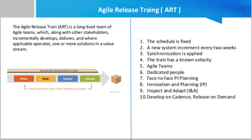The system demo provides a mechanism for evaluating the working system, which is an integrated increment from all the teams. Synchronization is applied — all teams on the train are synchronized into the same PI length, typically 8 to 12 weeks, and have common iteration start and end dates and duration. The train has a known velocity, meaning each ART can reliably estimate how much cargo — new features — can be delivered in a PI.